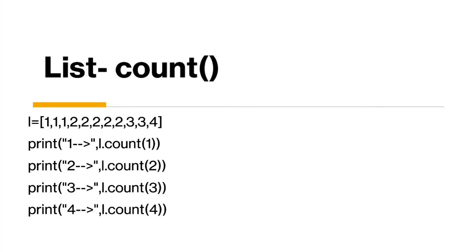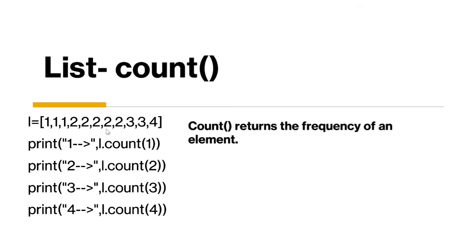Coming to the next function which is count — as the name suggests, it counts the occurrences. I have a list with repetitive numbers: one is repeating several times, two is repeating several times, and so on. The count function returns the frequency of an element. We call it as the list name dot count, and pass the element whose frequency you want to check. So for one it returns three, because one occurs three times, and for two it returns five, because two occurs five times.